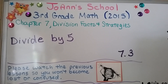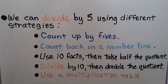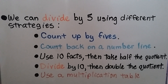Lesson 7.3: Divide by 5. Dividing by 5 means that we are making five equal groups, or we are making groups that each contain five. We can divide by five using different strategies: we can count up by fives, we can count back on a number line, we can use 10 facts then take half the quotient, we can divide by 10 then double the quotient, and we can use a multiplication table.